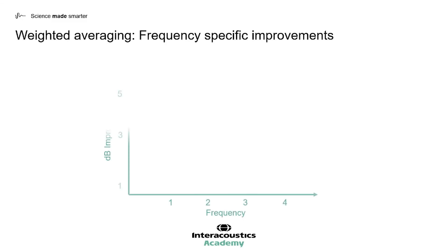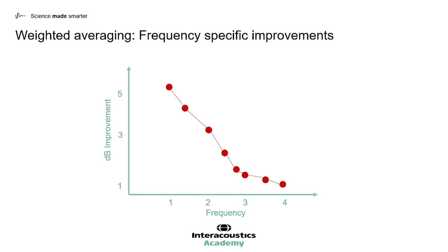Lastly, we should note that this effect is different across multiple frequencies. Weighted averaging techniques have greater signal-to-noise level improvements in the lower frequencies. A 3 dB improvement will reduce test time by 50%. Looking at 2 kHz for instance, by employing weighted averaging techniques we can save 50% of test time compared to traditional signal averaging. This improvement is greater in the lower frequencies and slightly reduced in the higher frequencies, but still provides an improvement at all frequencies compared to traditional signal averaging.